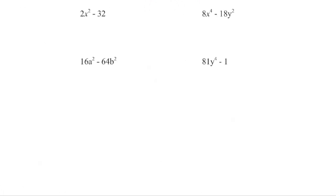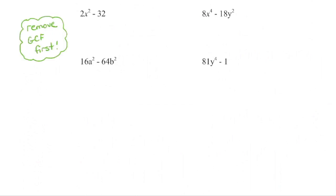If you see two terms, oftentimes you are going to be factoring as a difference of squares. We do have that subtraction sign, however 2 and 32 are not perfect squares. So check: do we have a greatest common factor? Yes, we do — always remove that first. Divide 2 out of each of those terms, and then check: can the inside of the bracket be factored further? Now we see we have a difference of squares again, so we need to keep going.